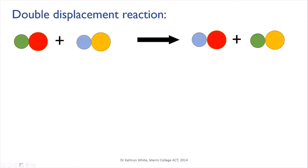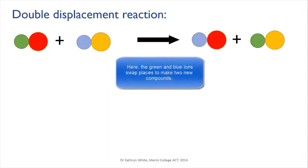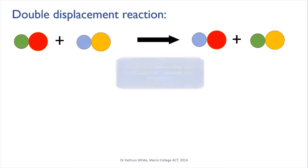The other kind of displacement is a double displacement. In this reaction, two ionic compounds, usually both dissolved in water but not necessarily, swap ions to produce two new compounds. If one of these new compounds is insoluble in water, it'll precipitate out as a solid.